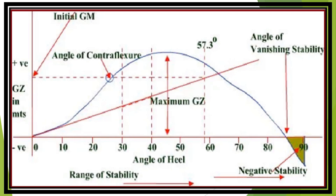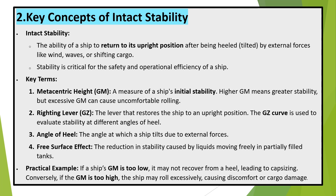The Righting Lever (GZ) is the lever that restores the ship to an upright position; the GZ curve is used to evaluate stability at different angles of heel. The Angle of Heel is the angle at which a ship tilts due to external forces. The Free Surface Effect is the reduction in stability caused by liquids moving freely in partially filled tanks. Practically, if a ship's GM is too low, it may not recover from a heel, leading to capsizing. Conversely, if the GM is too high, the ship may roll excessively, causing discomfort or cargo damage.